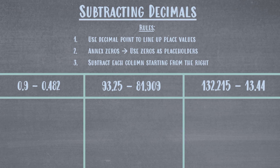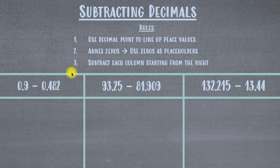Hello there and welcome to the Math Review. This lesson is on subtracting decimals and we have three examples to go over, but like our other lessons we need to make sure that we understand the rules before we try and solve any of these examples. Rule number one says make sure when you're subtracting decimals that you use the decimal points to line up your place values.